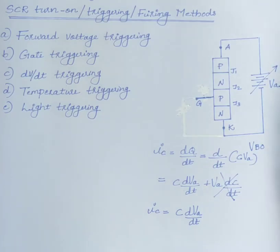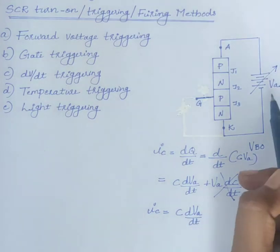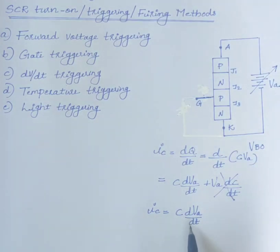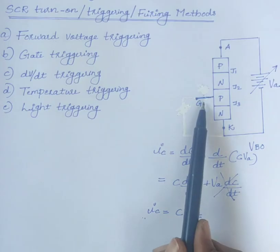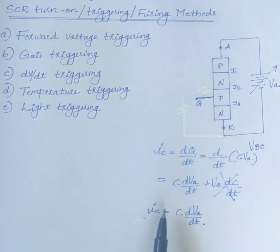If the rate of rise of forward voltage, DVA by DT is high, the charging current IC would be more. This charging current plays the role of gate current IG. This turns on the SCR, even though gate signal is zero. This is known as DV by DT triggering.